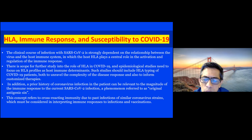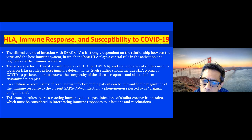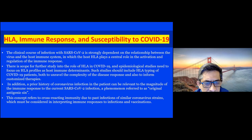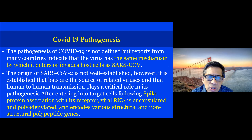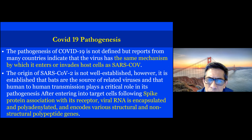A phenomenon referred to as the OAS — original antigenic sin — refers to cross-reacting immunity due to past infections of similar coronavirus strains, which must be considered in interpreting the immune response to infections and vaccinations. Although the pathogenesis of COVID is not fully defined, reports from many countries indicate the virus uses the same mechanism by which it enters or invades host cells.